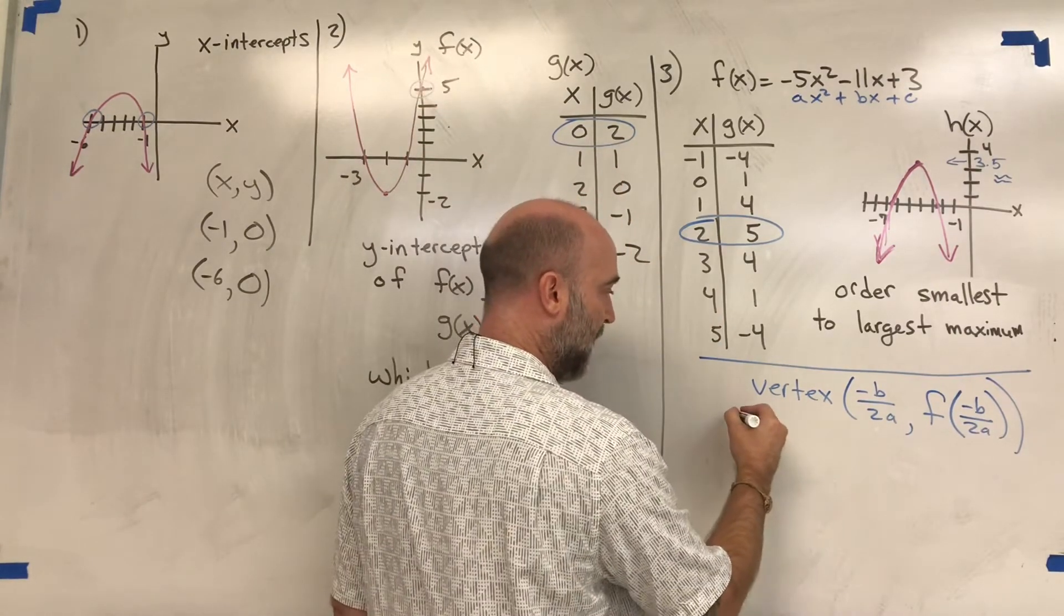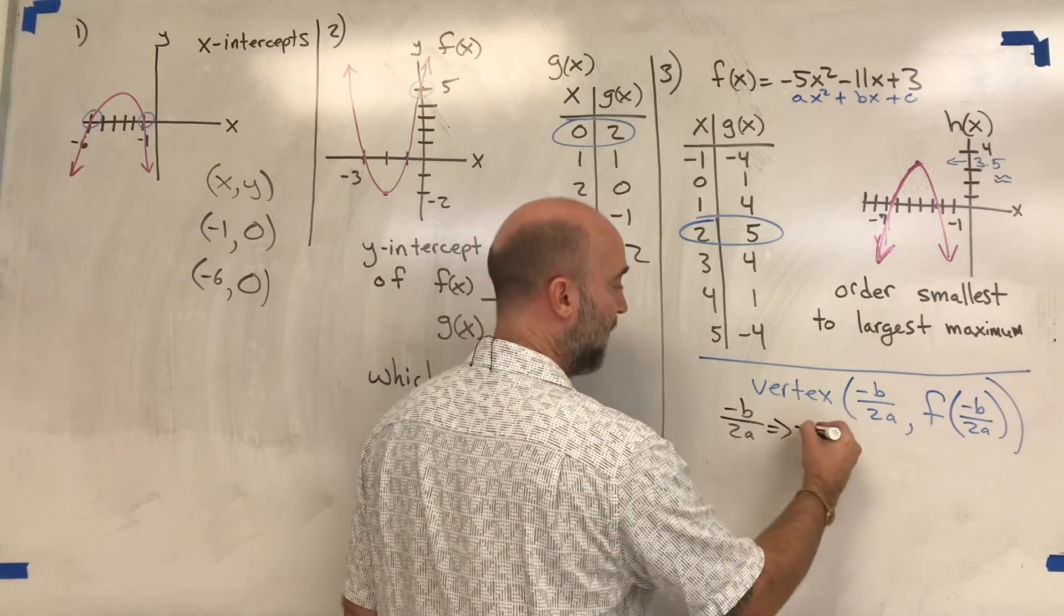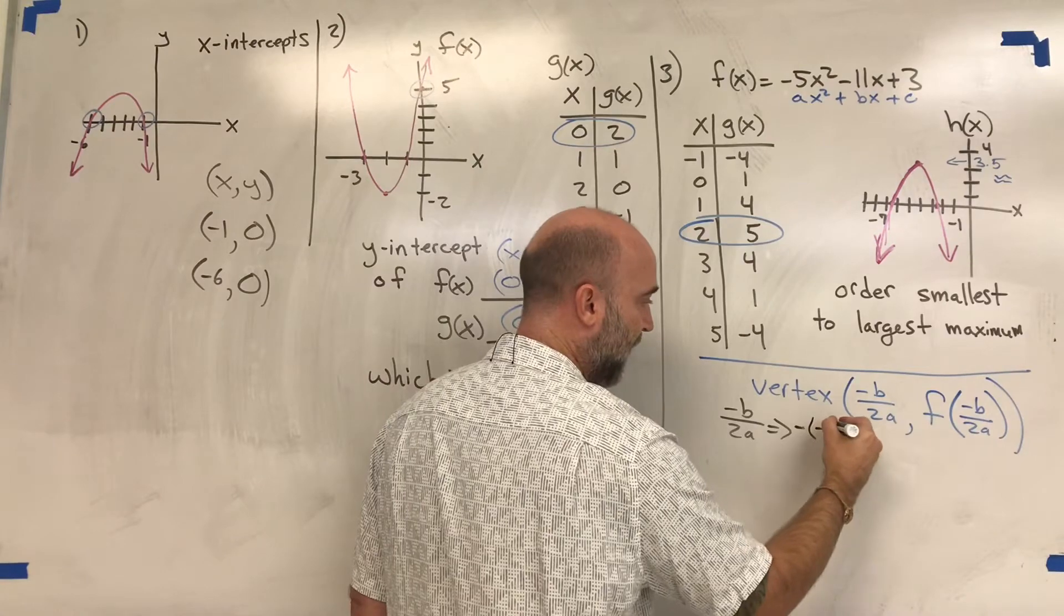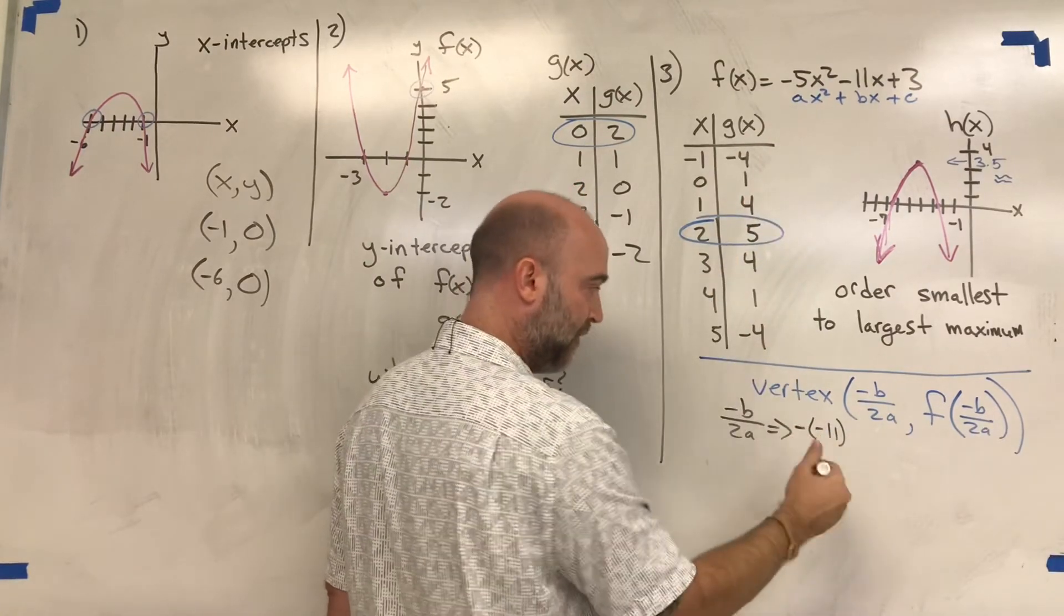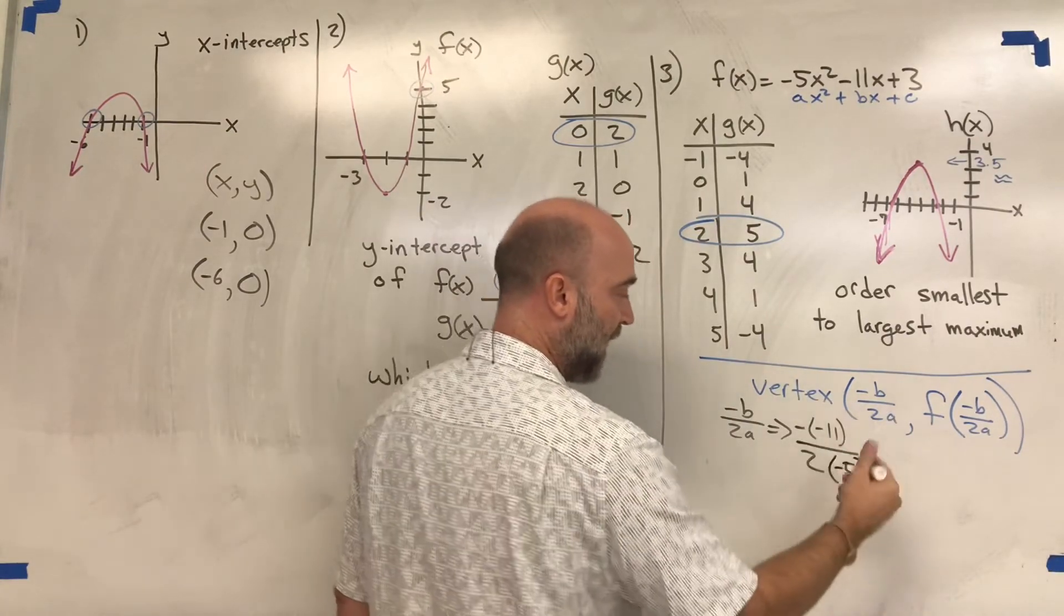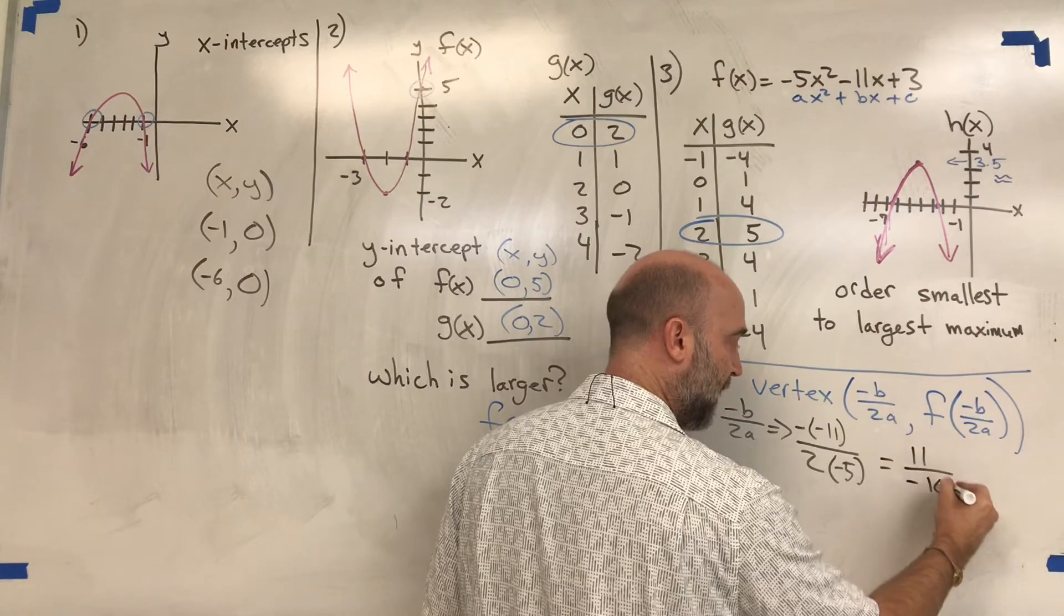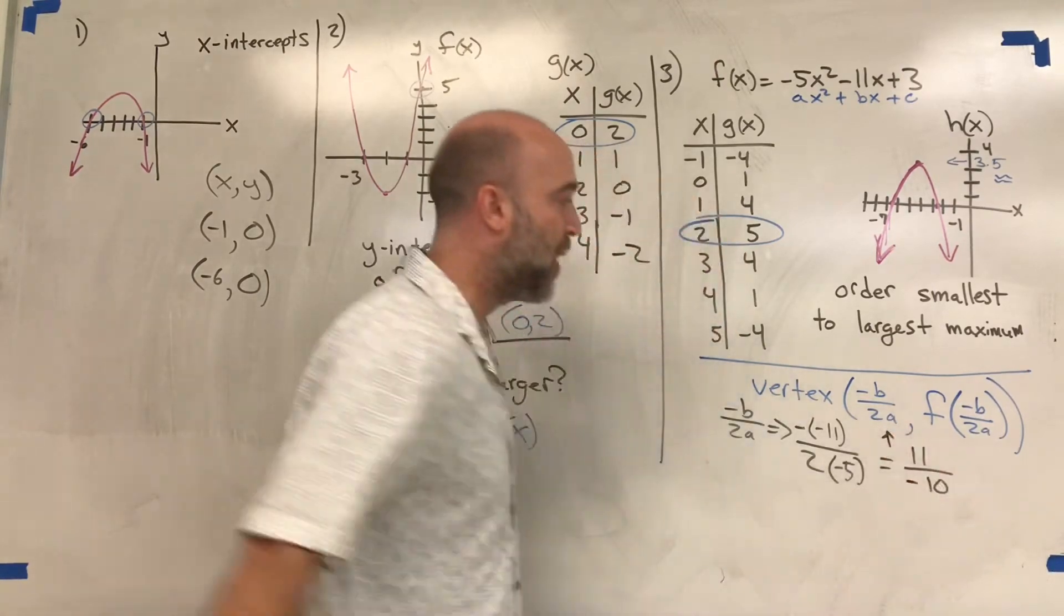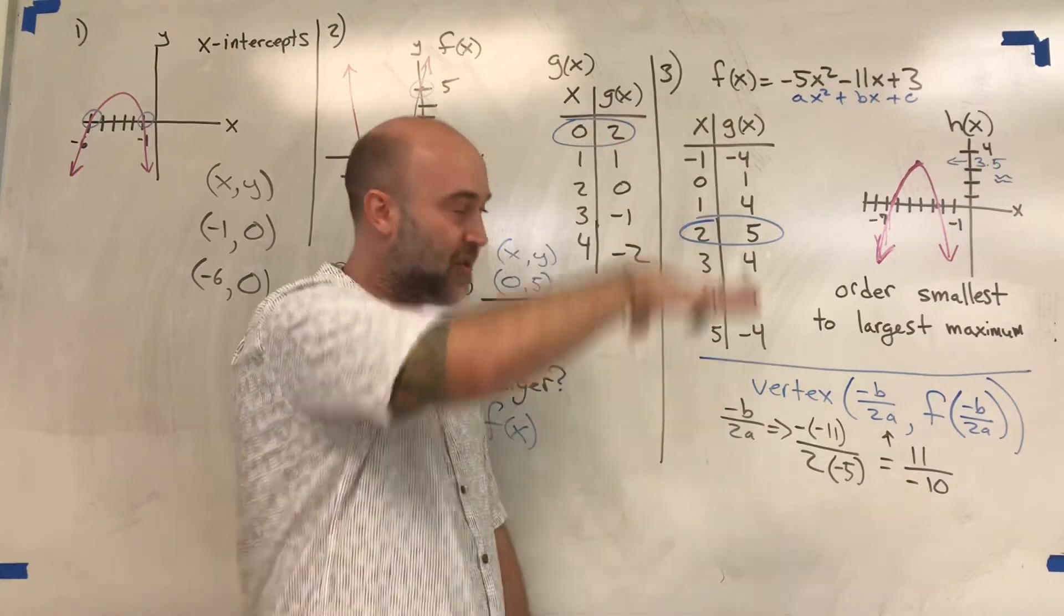I'll plug those in. Let's rewrite the formula: -b/(2a). This becomes -(-11)/(2 × -5). Notice I said negative twice. Two negatives make a positive, and 2 times -5 is -10. Looks like we need a calculator. So now I know the x-component of my vertex, but we need the y-component. The y tells us which one's larger.